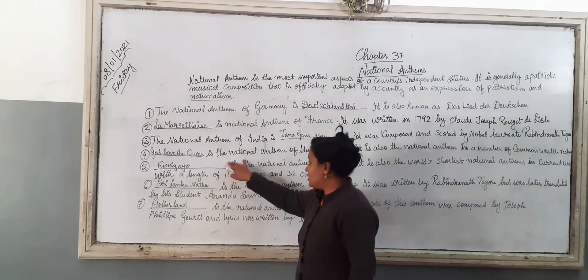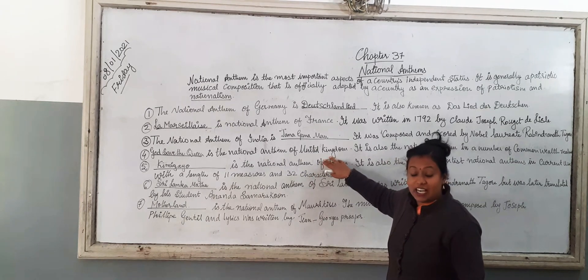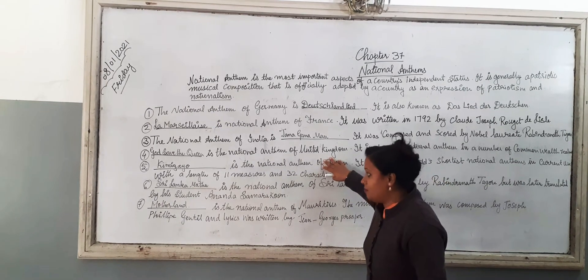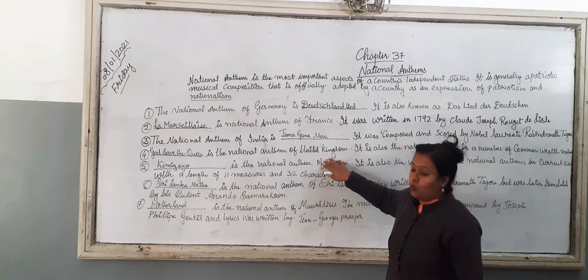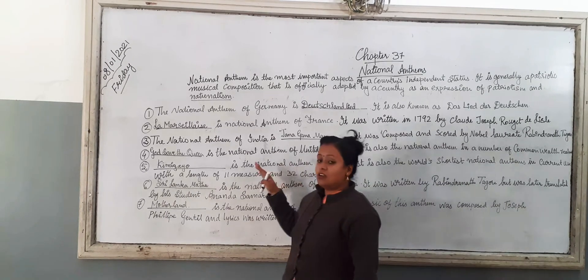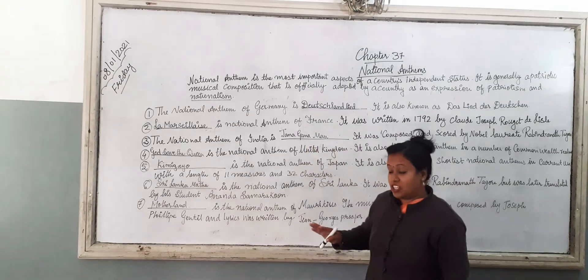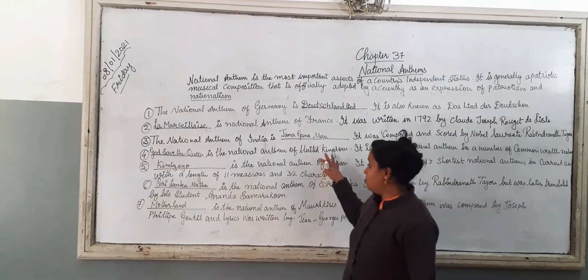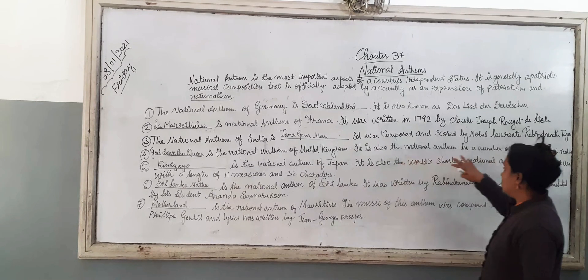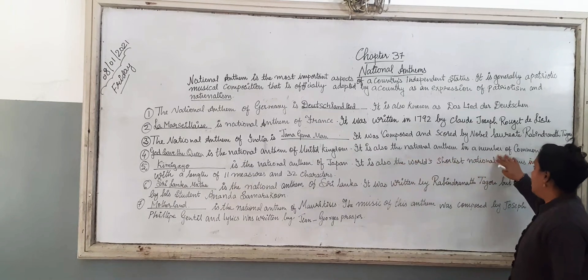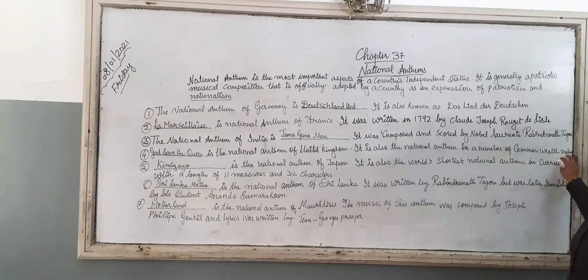The National Anthem of the United Kingdom is 'God Save the Queen'. It is the National Anthem of the United Kingdom. It is also the National Anthem of some other territories.